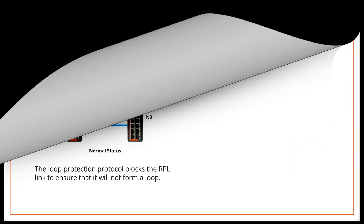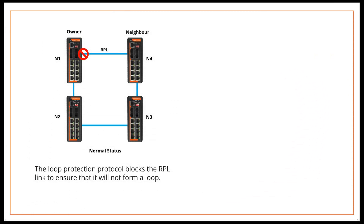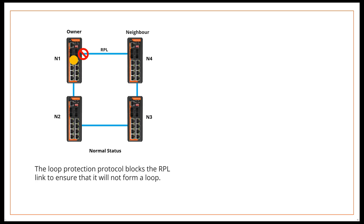When in normal status, all nodes are connected in a ring on the physical topology. The loop protection protocol blocks the RPL link to ensure that it will not form a loop, and fault detection is performed on each link between adjacent nodes.